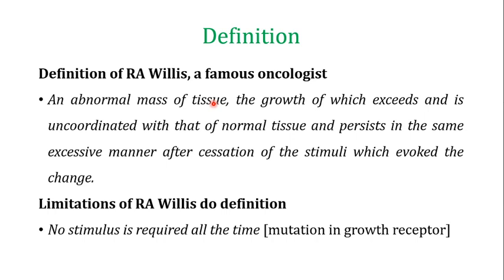One famous definition of neoplasm comes from R.F. Welles, a famous oncologist. He defines it as: an abnormal mass of tissue, the growth of which exceeds and is uncoordinated with that of the normal tissue. That means if normal tissue divides two times under a given condition, the neoplasm or tumor will divide four or six times — an excessive and uncoordinated cell division.